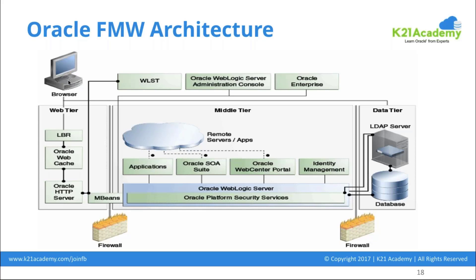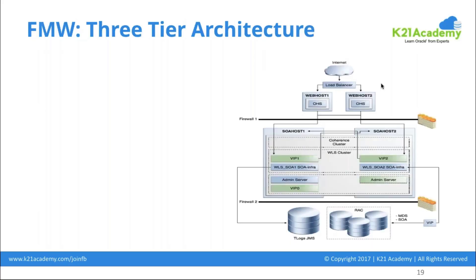You put a proxy layer — the web tier — between the application tier and the end users. Another reason is single sign-on: there's a component called Web Gate that you deploy on the web server so applications can be easily integrated with Oracle Access Manager or a single sign-on product. So this 3-tier architecture — web tier, middle/application tier, and database tier — is a single-node setup; high availability will be covered later.